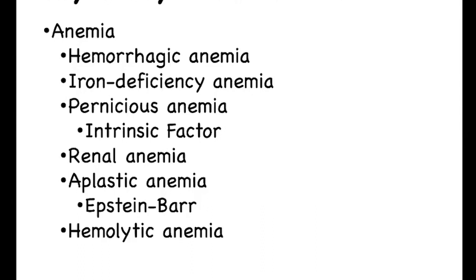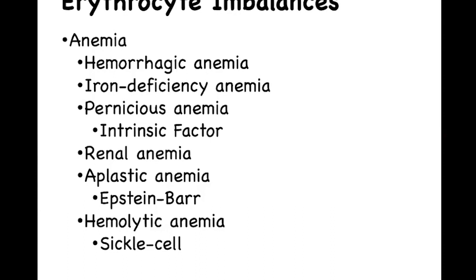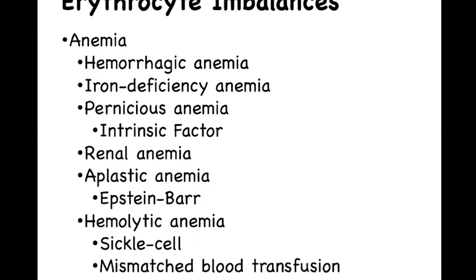Lastly, hemolytic anemia. Lysis means to break apart, and in hemolytic anemia the red blood cell lyses. There are several different causes for this, such as sickle cell anemia, which is a hereditary disease. The red blood cell is affected — there's a mutation in the hemoglobin, and when the hemoglobin unloads oxygen at the tissues, the red blood cell changes its shape and becomes sickle. This can obstruct blood flow downstream, leading to decreased oxygen to tissues, which can cause damage and pain, and the weakening of cells so that they lyse. Another condition that can bring about hemolytic anemia is a blood transfusion reaction.